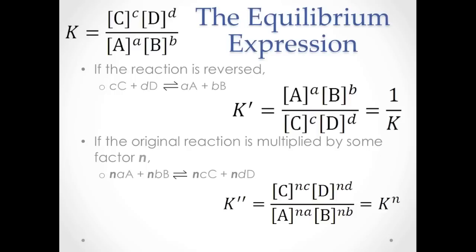If the original reaction's coefficients were multiplied by some factor n, then applying the law of mass action makes the new equilibrium constant, we'll call it K double prime, equal to K to the power of n, because each of the powers in the equilibrium expression would also be increased by a factor of n.